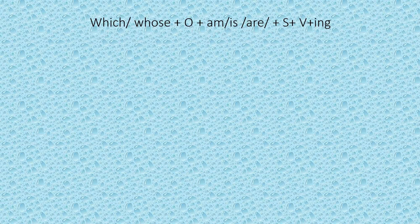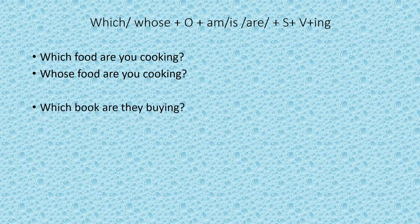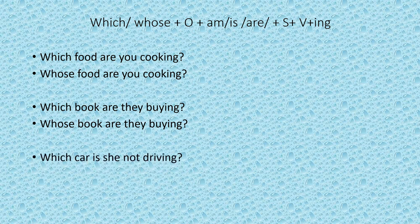Which and whose type questions. In which and whose type questions, the object comes before the subject. Structure: which/whose + object + am/is/are + subject + verb with -ing. Which food are you cooking? — आप कौनसा खाना पका रहे हो? Whose food are you cooking? — आप किसका खाना पका रहे हो? Which book are they buying? — वे कौनसी किताब खरीद रहे हैं? Whose book are they buying? — वे किसकी किताब खरीद रहे हैं? Which car is she not driving? — वो कौनसी कार नहीं चला रही है? Whose car is she not driving? — वो किसकी कार नहीं चला रही है।